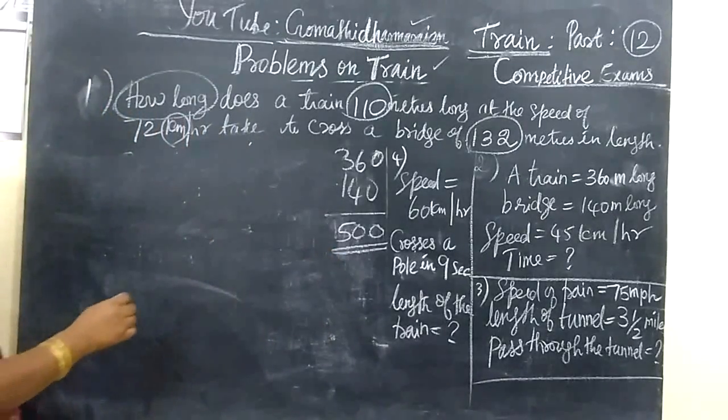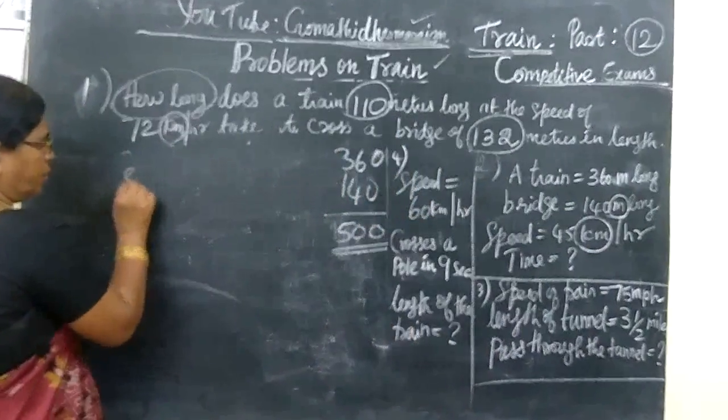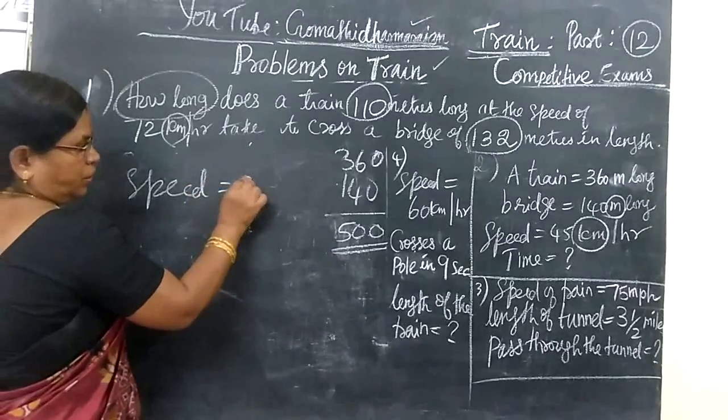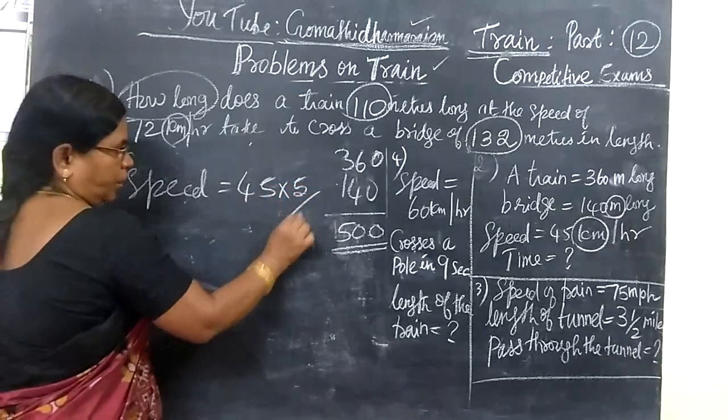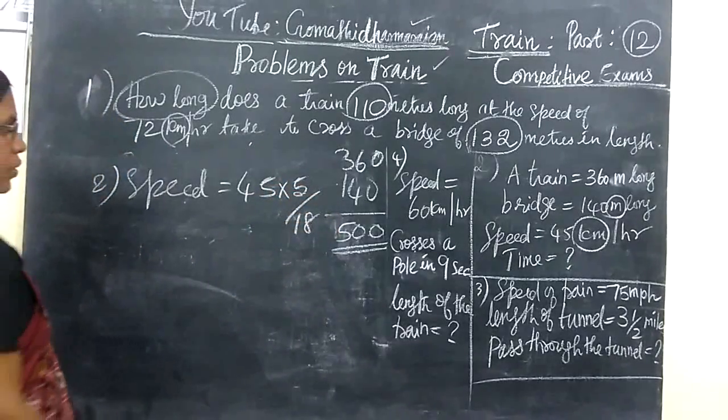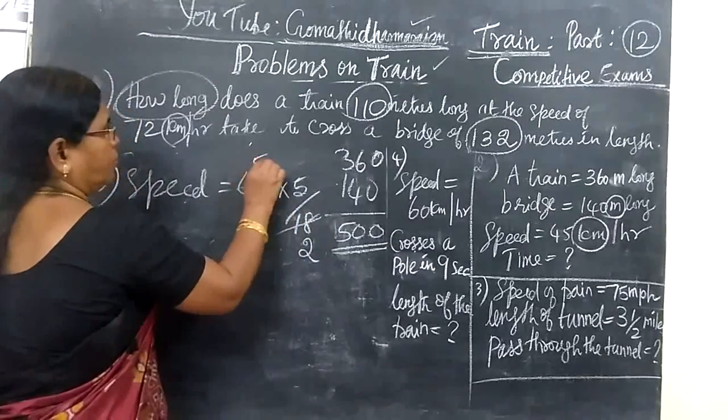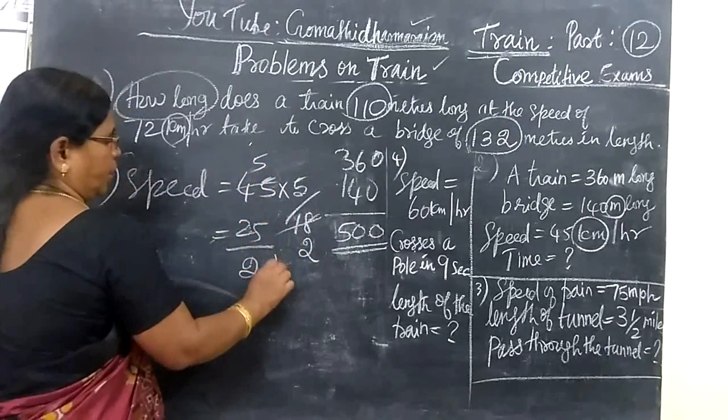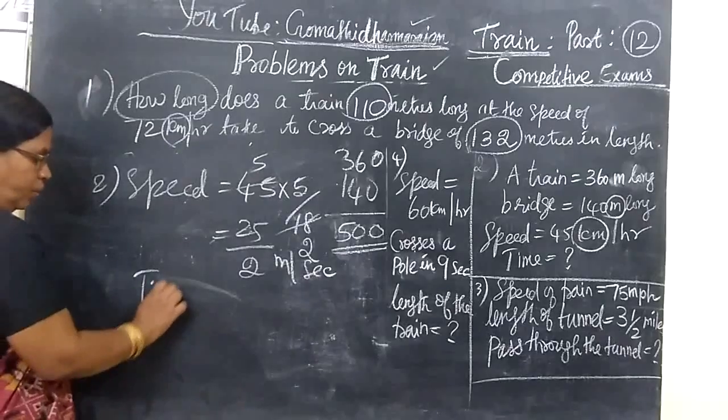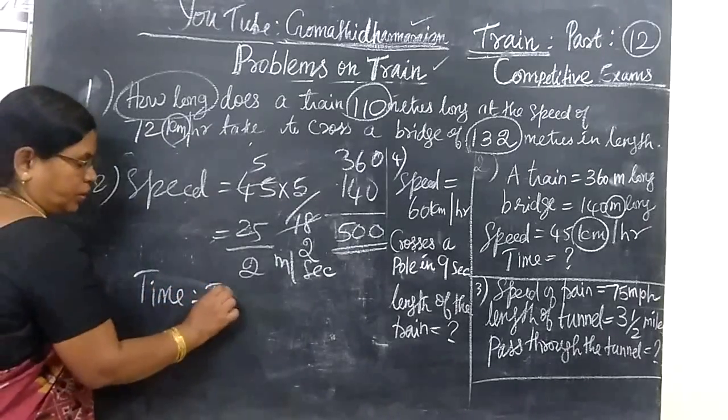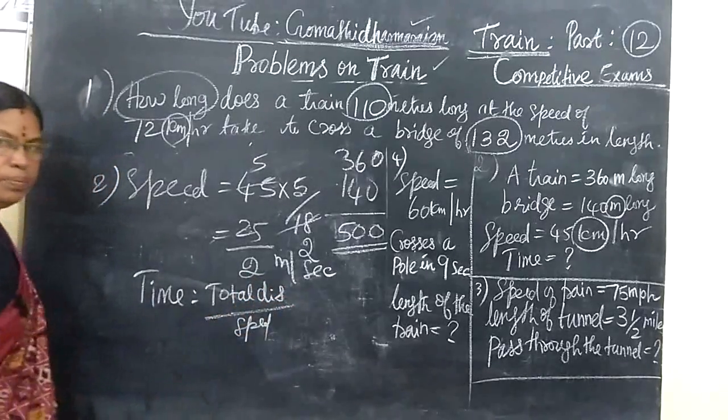Then, after that, here it is given in kilometers per hour, but we need it in meters per second. So we convert the speed. Speed equals 45 into 5 by 18. For this, you can take 9 tables, 2 times 5 times. So 25 by 2 meters per second.